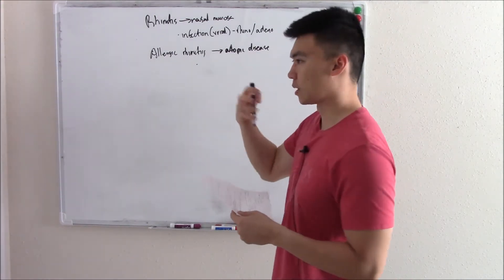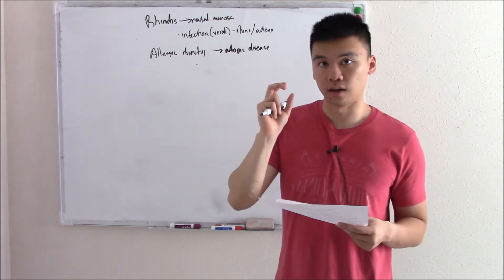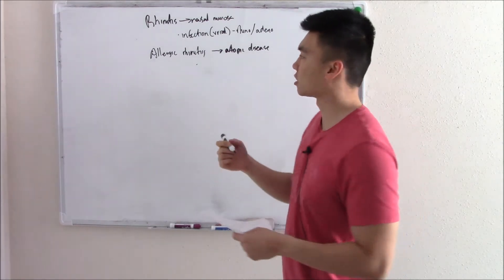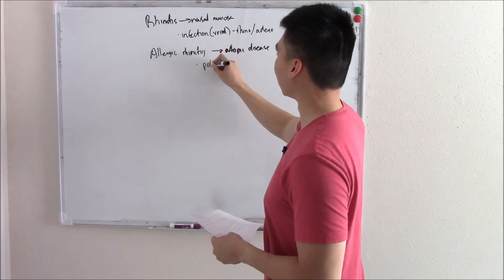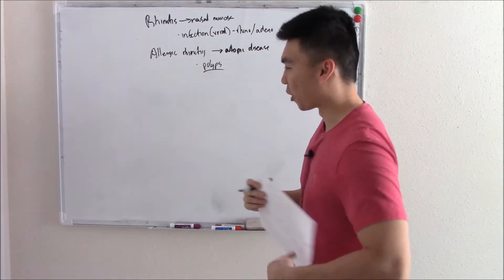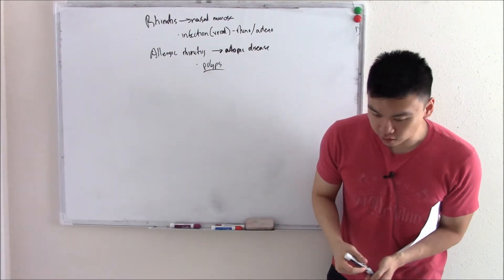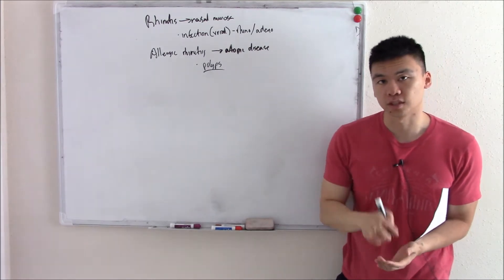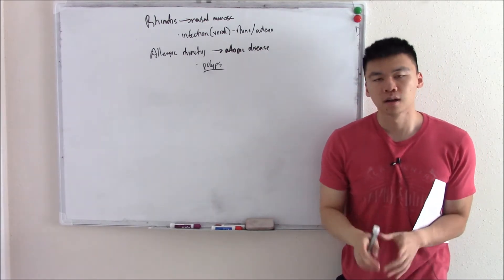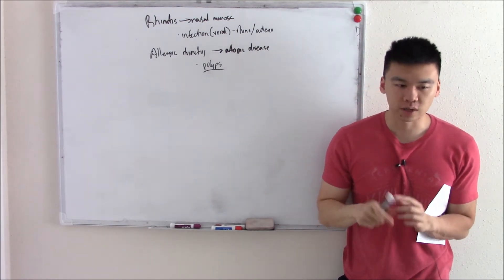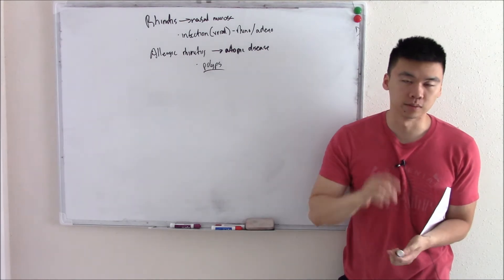Something you should know, this constant inflammation can cause an overgrowth of the nasal mucosa. Fleshy overgrowth. Fancy way of saying that is polyps. I'm gonna ask you we talked about a few other conditions that cause polyps. Can you recall what those were? Pause the video and try and recall what they were. There are two of them.